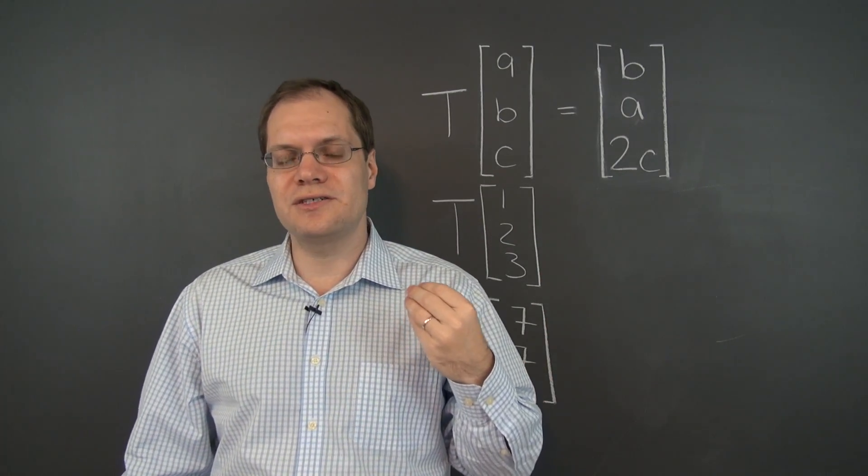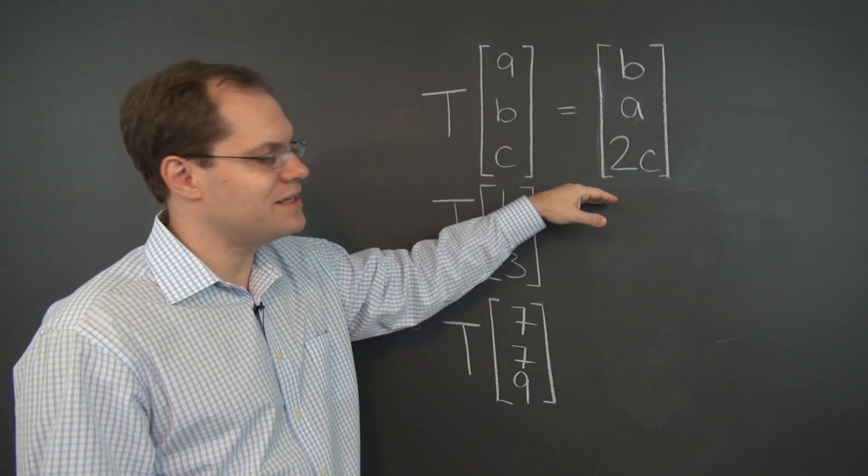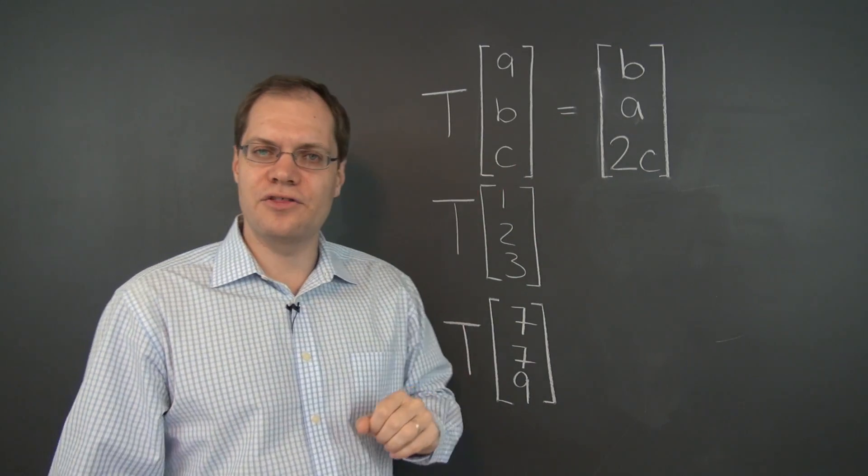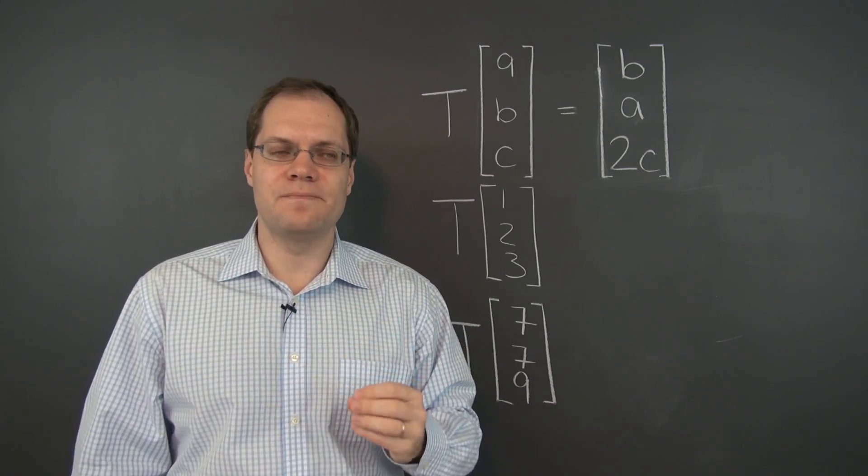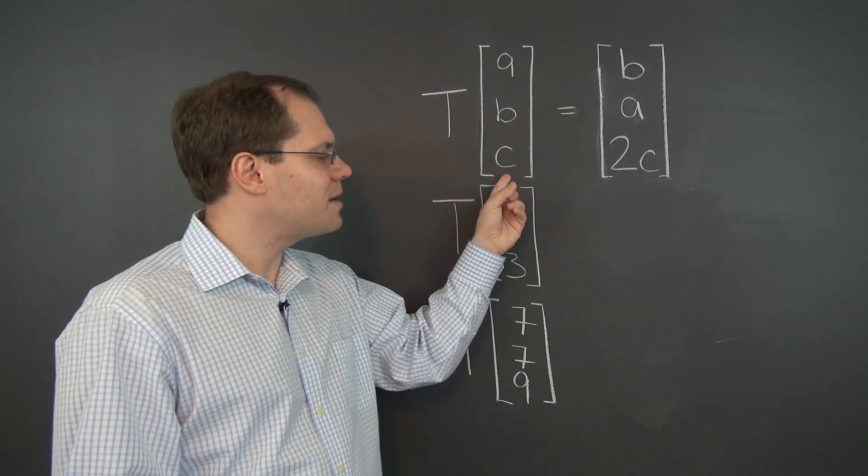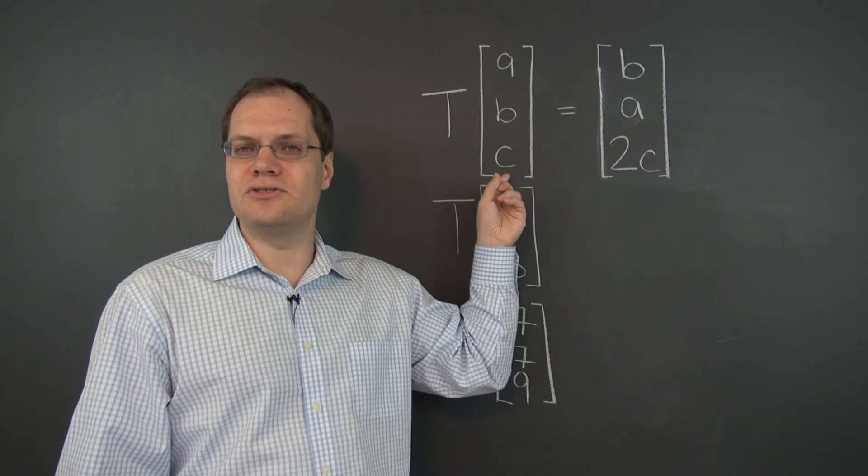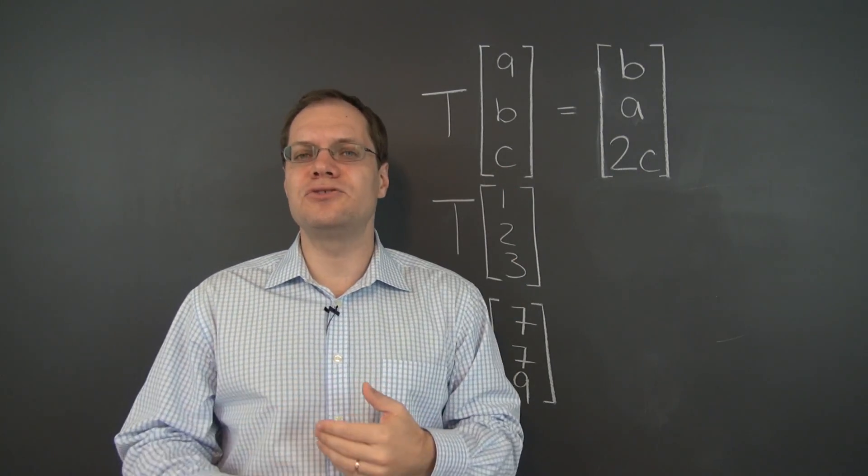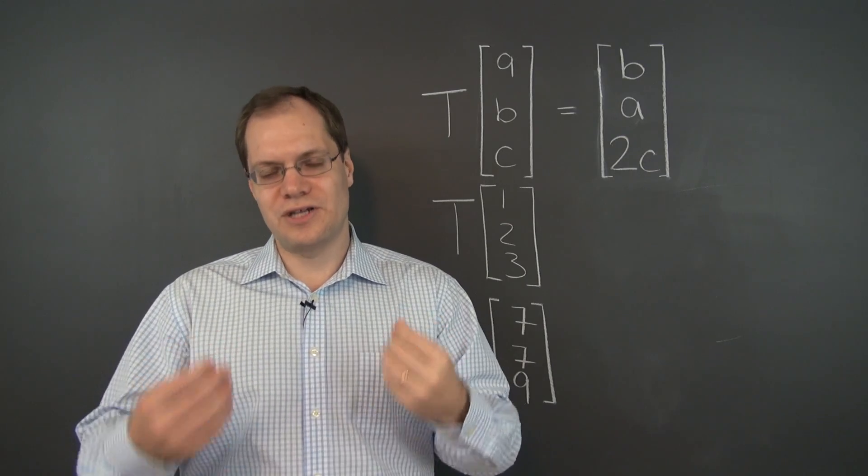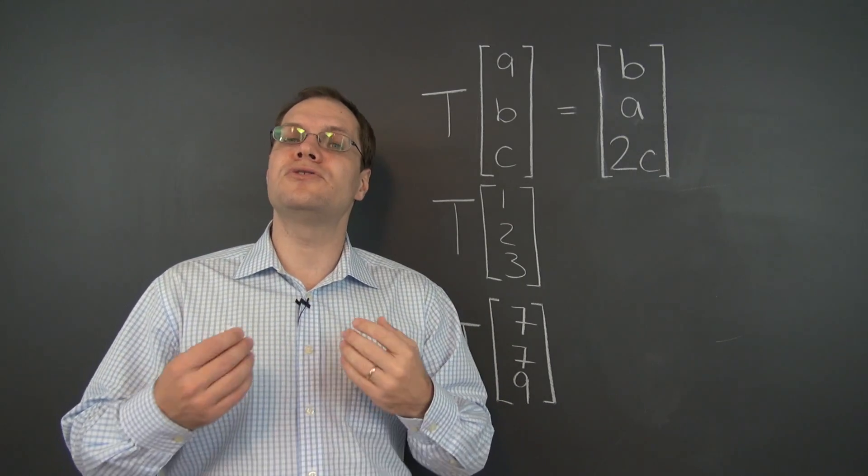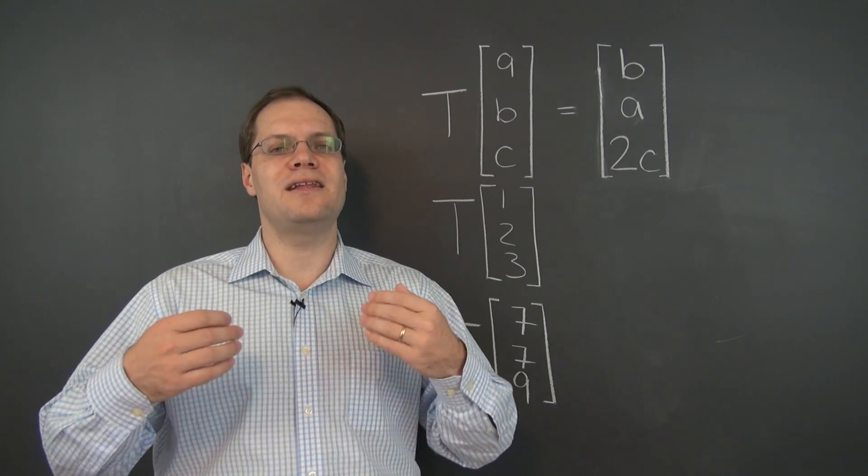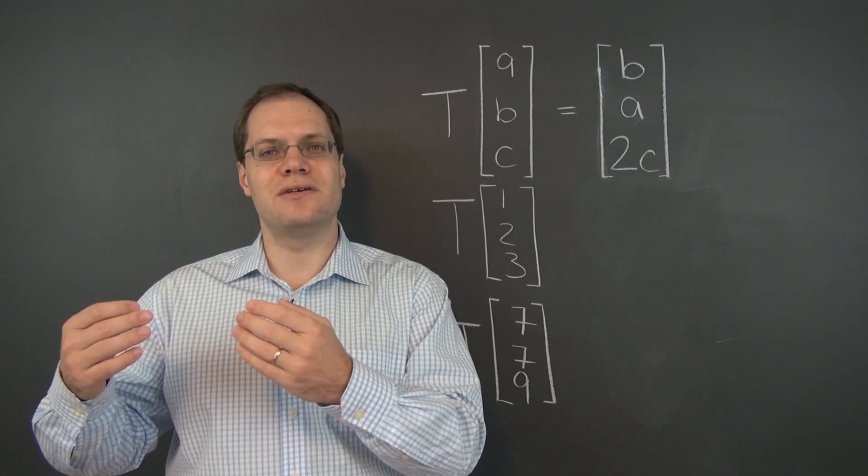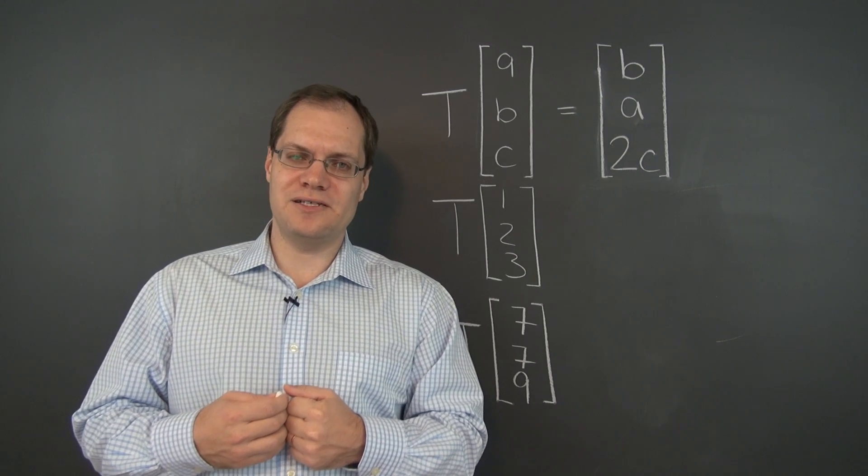Because we're now dealing with vectors in Rn, which are sets of n numbers, in particular R3, triplets of numbers, to specify a transformation I need to indicate what happens to each individual entry of the vector. This is an entry-wise sort of transformation. You should also notice how the description of the transformation is always very natural with respect to the type of linear space we're dealing with.